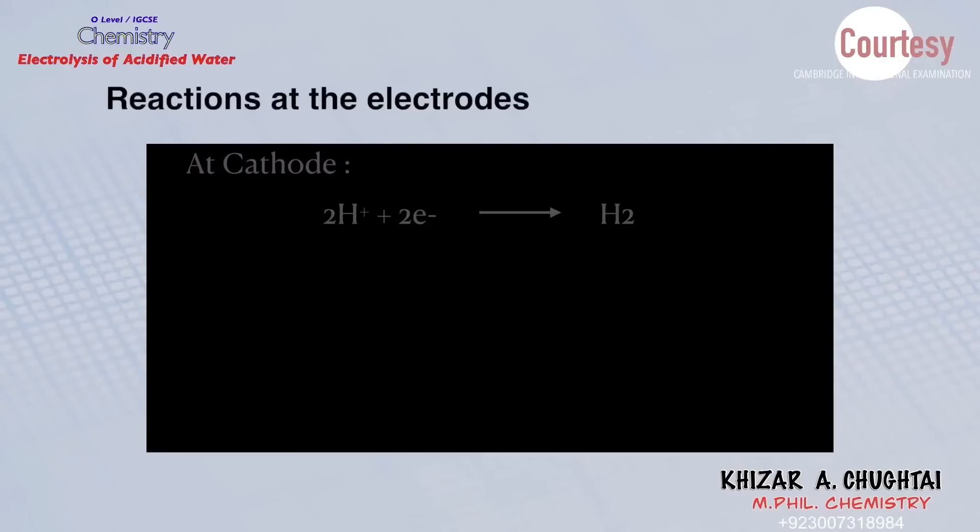And this is the half equation occurring at the cathode, and this happens at the anode. Here are the two reactions. Again electrons must be conserved, therefore after multiplying the coefficients of the reaction occurring at the cathode by 2.